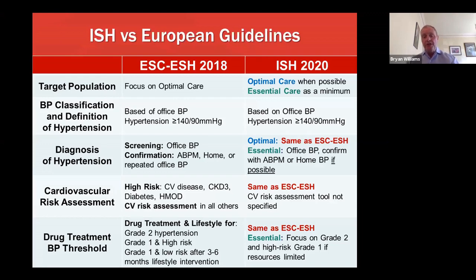The essential requirement for low resource settings in the ISH guideline is to use office blood pressure throughout to both diagnose and monitor blood pressure, with the use of ABPM or home blood pressure if possible in these settings to confirm the diagnosis of hypertension.